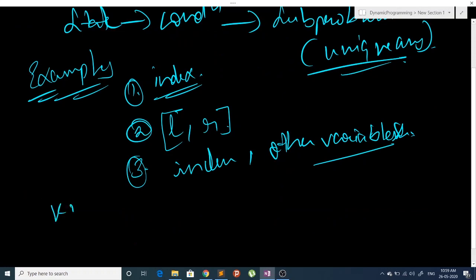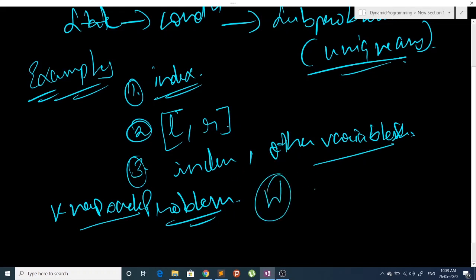So how will we define the state of this problem? The problem says that we are given a weight W and we are also given some objects such that the values are defined for each object and their weight is also defined.